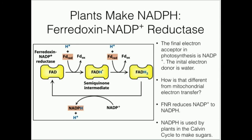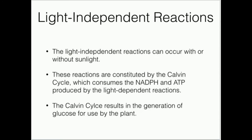So mechanistically, in the middle of the pathway, it's not just the reverse of cellular respiration. But overall, the net reactions are almost exactly opposite. FNR, or ferredoxin NADP+ reductase, reduces NADP+ to NADPH. This NADPH is going to be used ultimately by the Calvin cycle, which is part of the light-independent reactions.